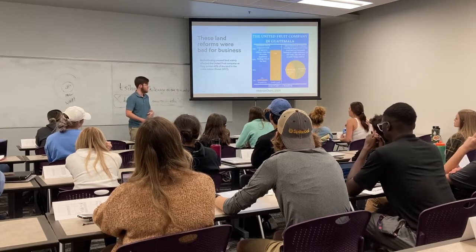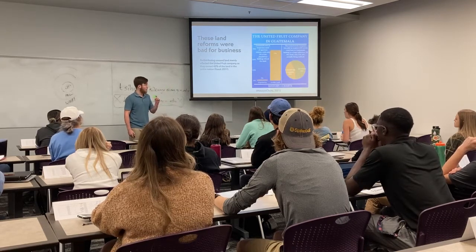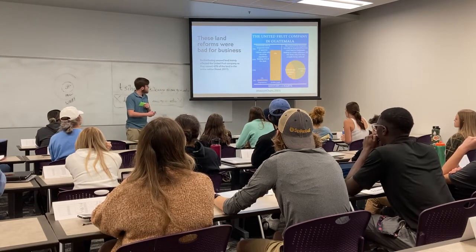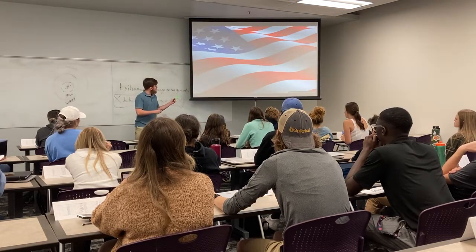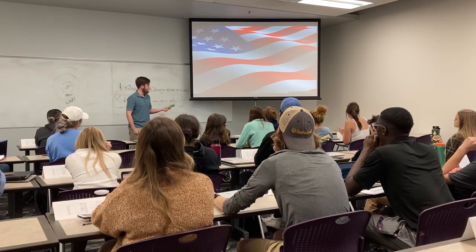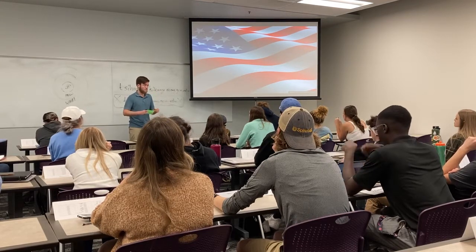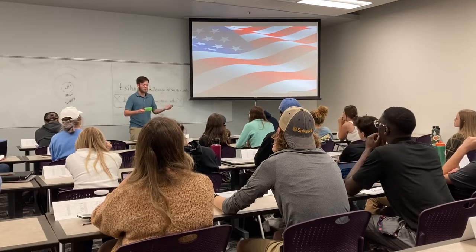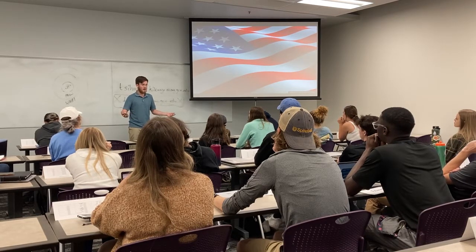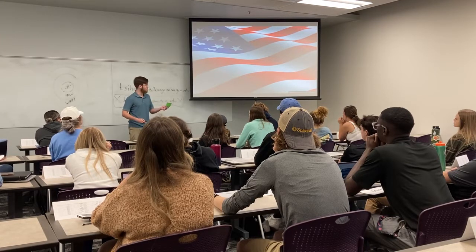72% of the arable land in the entire country belonged to United Fruit Company, an American company. One of the things Arbenz tried to do was redistribute the land that belonged to United Fruit Company, buying it back based on how they had evaluated the land on their taxes. United Fruit Company had undervalued the land on their tax reports to cheat the system and make more money.